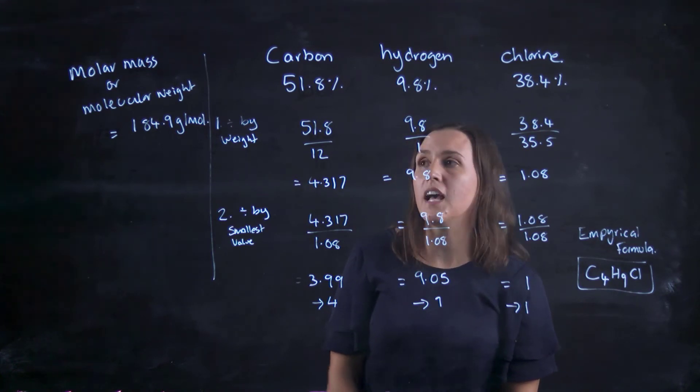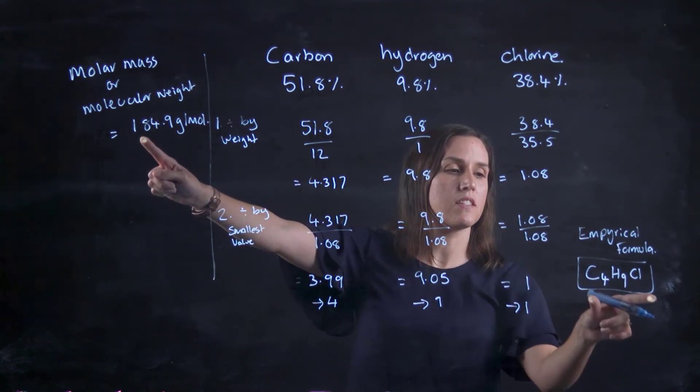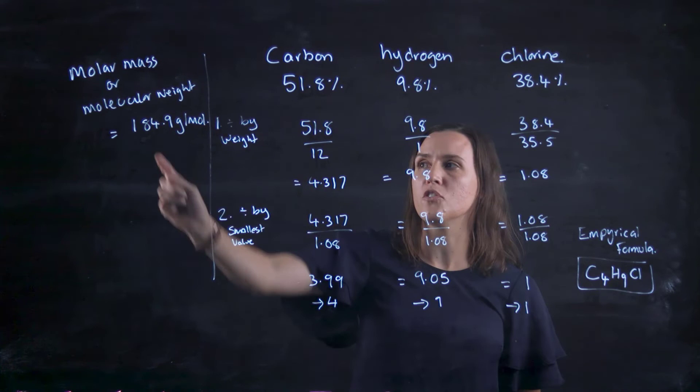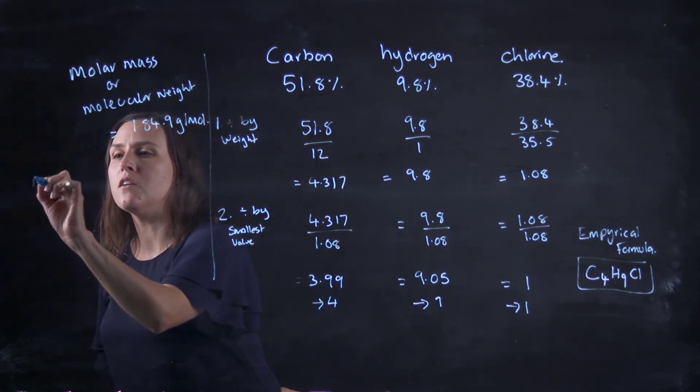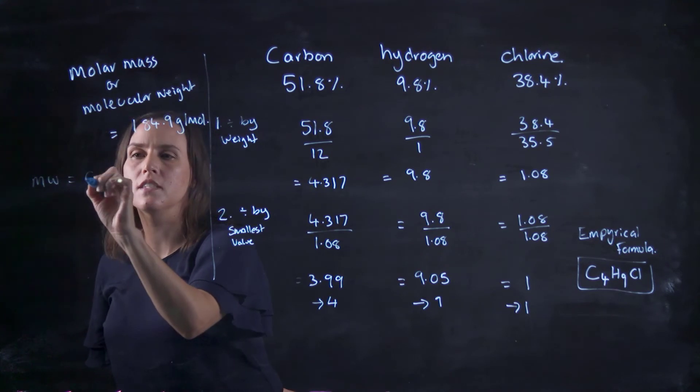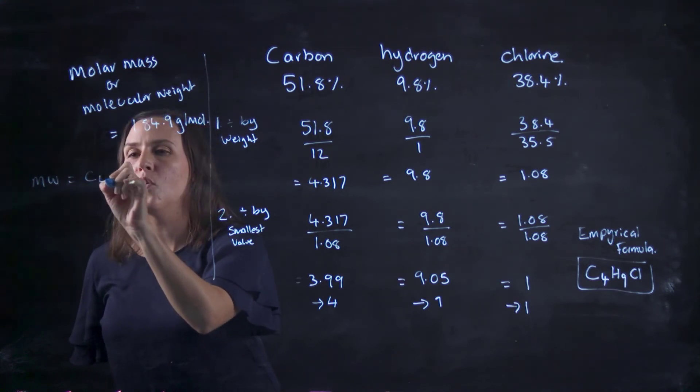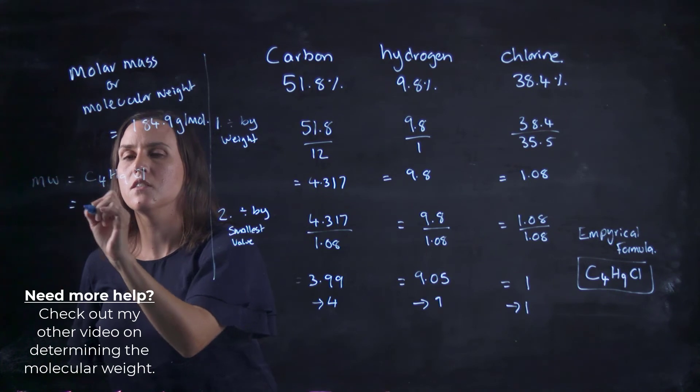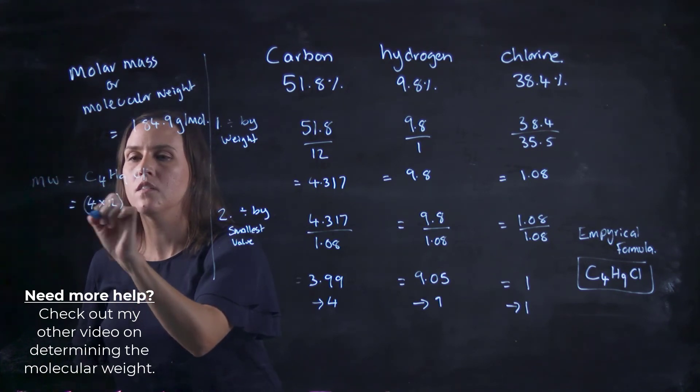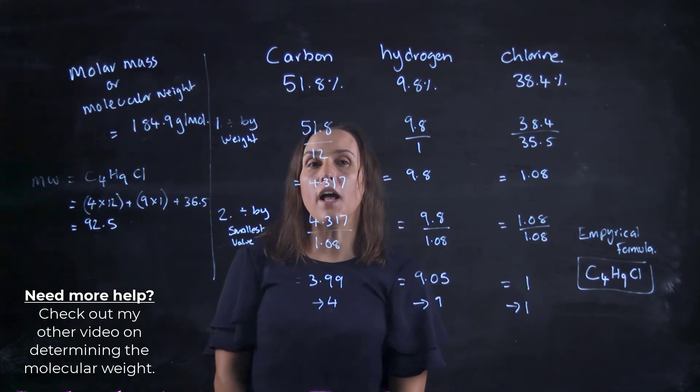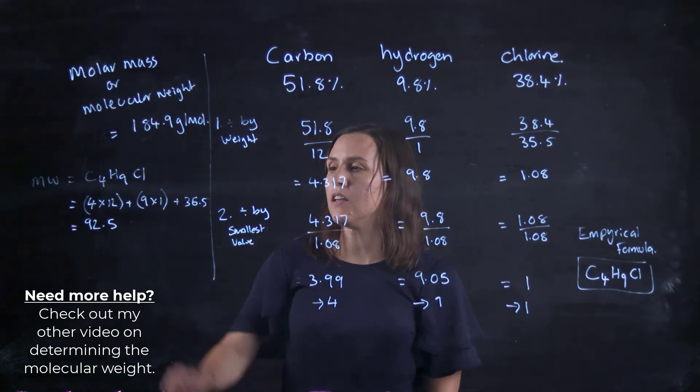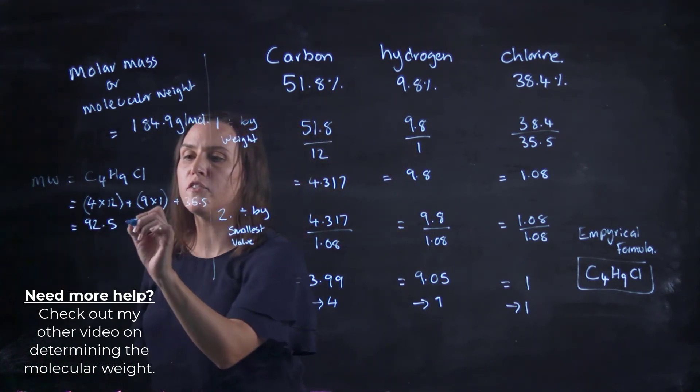Now to work out my molecular formula, I see how many times C4H9Cl fits into 184.9 grams per mole. So to work out the molecular weight of C4H9Cl1 would be the first step. So one lot of the empirical formula equals 92.5 grams per mole.